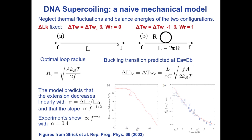So, this is a very simple model of this supercoiling transition: a filament where you start rotating at the two ends, just by taking into account ground state energy with no fluctuations. It predicts results quite close to reality. In the next lecture, we will see more sophisticated models that take fluctuations into account. But this is a nice, very simple naive model and already a nice starting point.